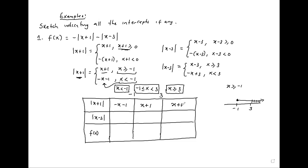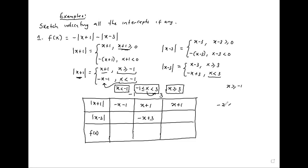Any value greater or equal to 3 is greater than negative 1, so that definition holds. For the modulus of x minus 3: when x is less than 3, it is negative x plus 3 — and this applies also when x is less than negative 1, since negative 2 is still less than 3. When x is greater or equal to 3, the modulus of x minus 3 equals x minus 3.